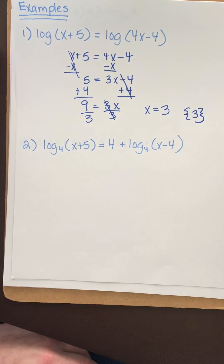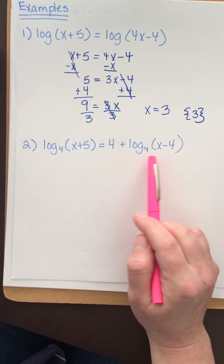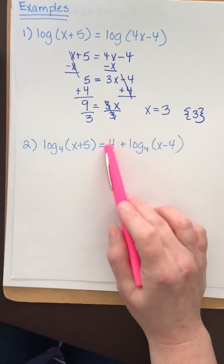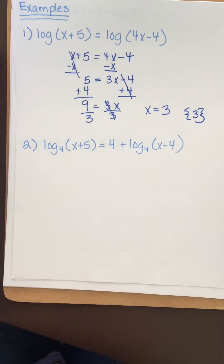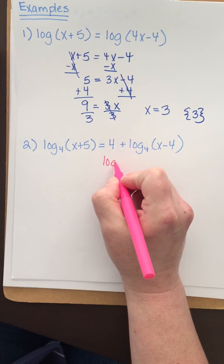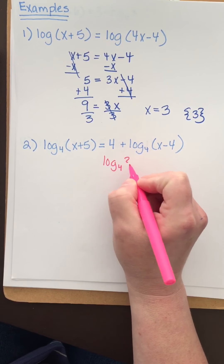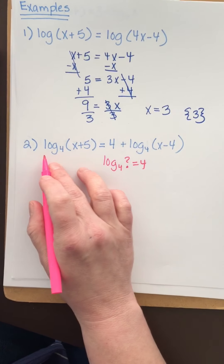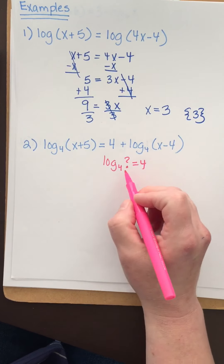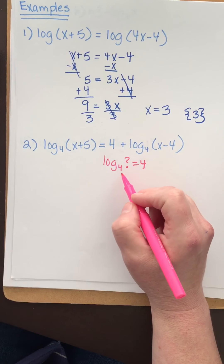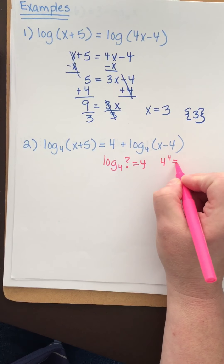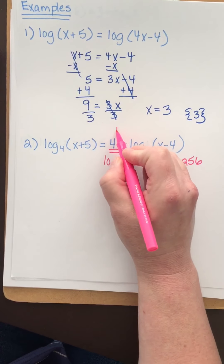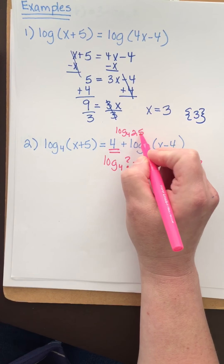For the next one, we have log base four of x plus five equals four plus log base four of x minus four. That four is a problem because I need log of something on that side. So ask yourself: log base four of what number gives me four? Think of the exponential form — four to the fourth power is 256. So I can write log base four of 256.